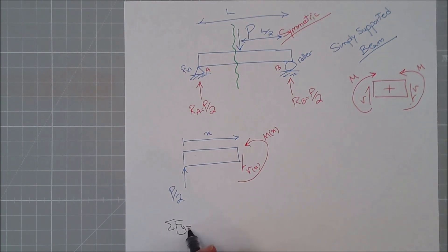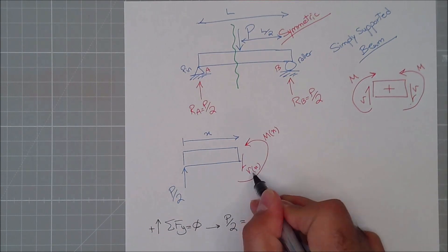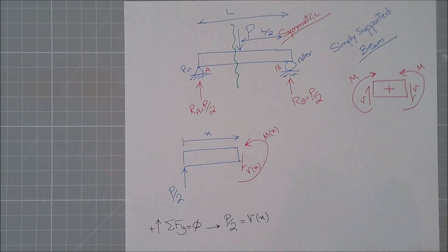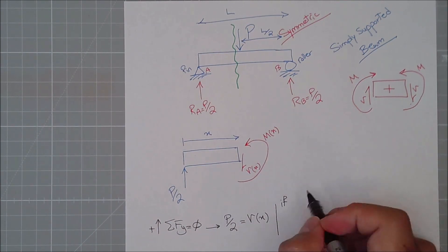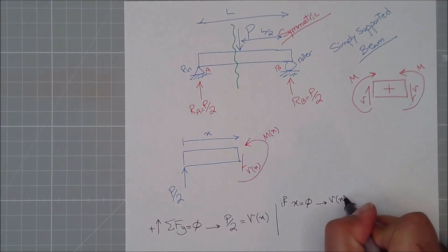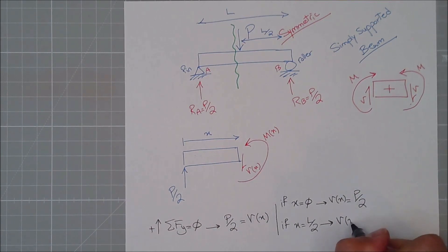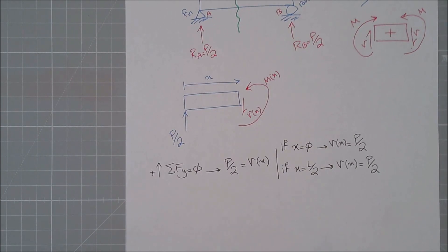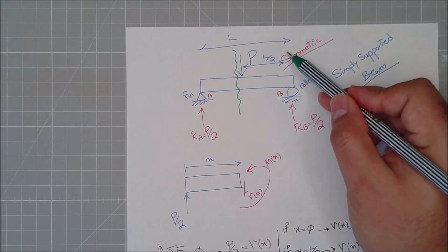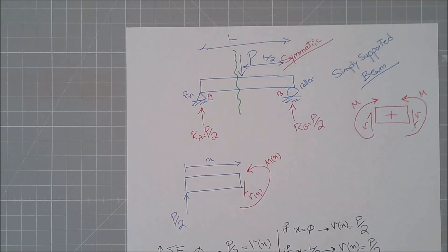Summation of all forces in the y-direction equals zero, taking upward as positive. From this I conclude that V(x) = P/2. There's nothing else to consider — it's always P/2. You might ask why I'm not substituting l yet. That's because when there's a distributed load or another change, I handle each segment separately. For now, just remember: we start a segment from the beginning until there's a change.